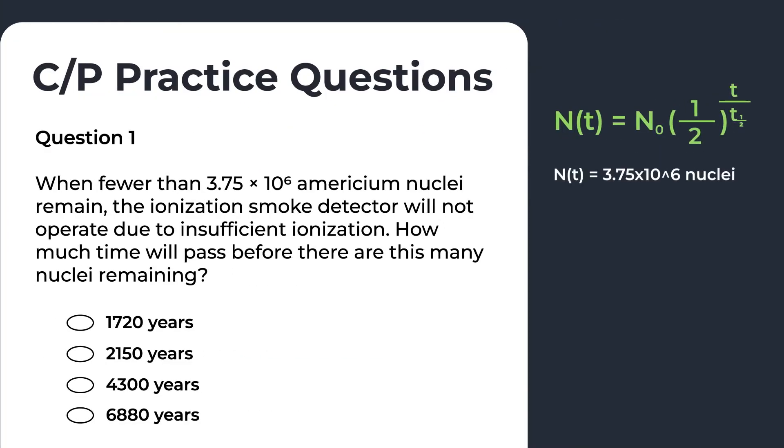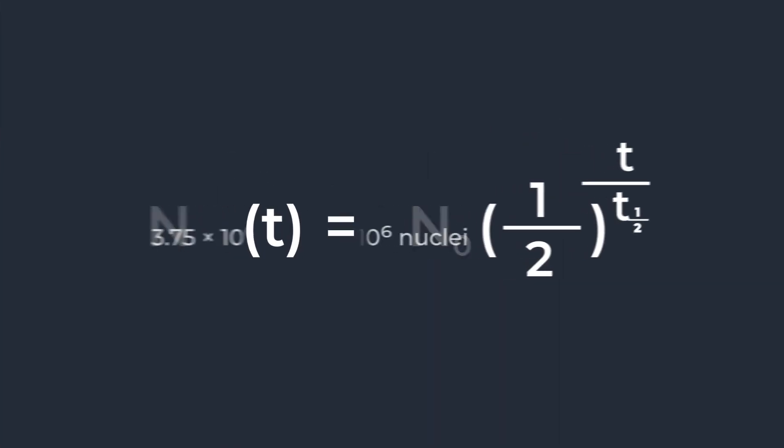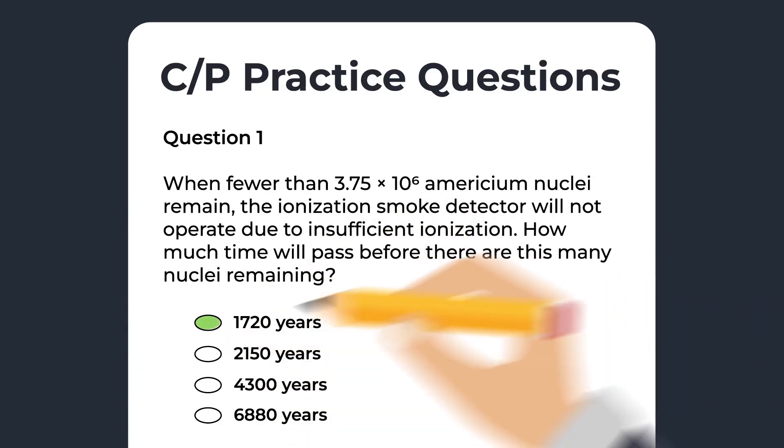However, looking at the formula more carefully, we see that we're missing some essential variables — specifically the half-life and the initial amount of nuclei present. In this case, we want to go back to the passage to find additional information. The half-life of those nuclei is 430 years and the initial amount of nuclei is 6 million. Now we have all the variables necessary to solve for the unknown time. It would be straightforward to rearrange the equation and find the amount of time it takes for those 6 million nuclei to decay.